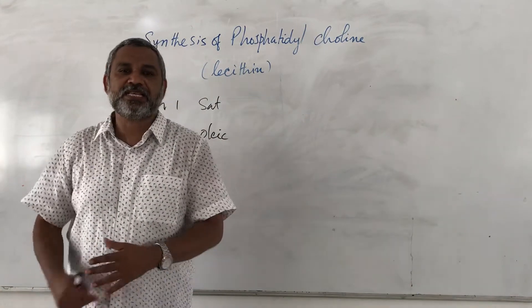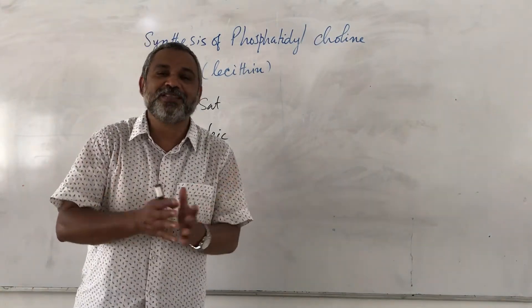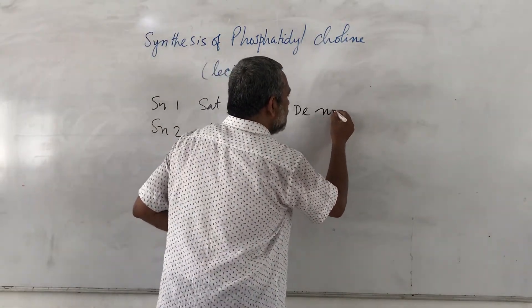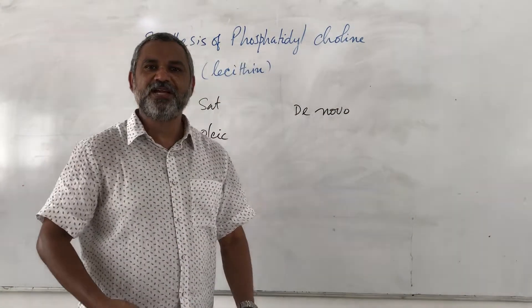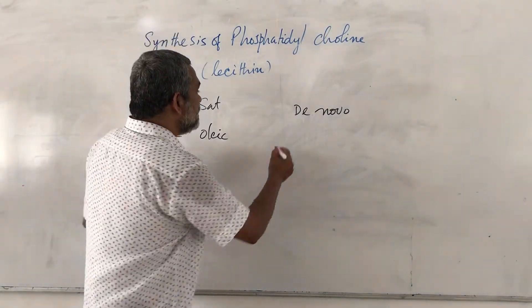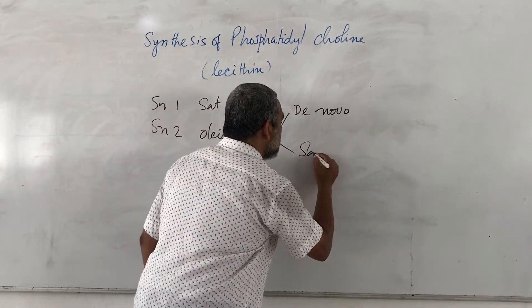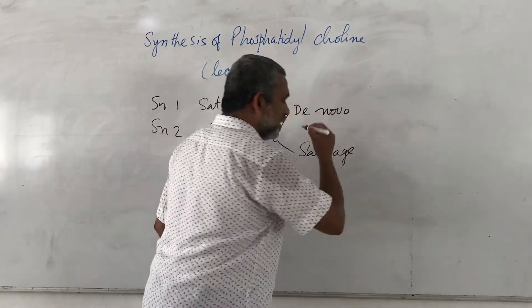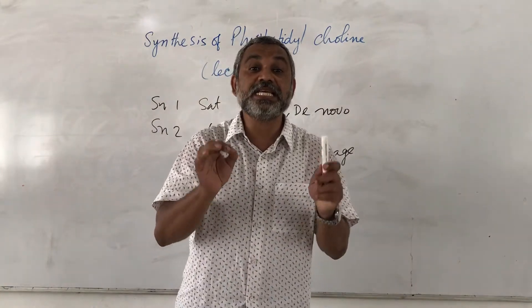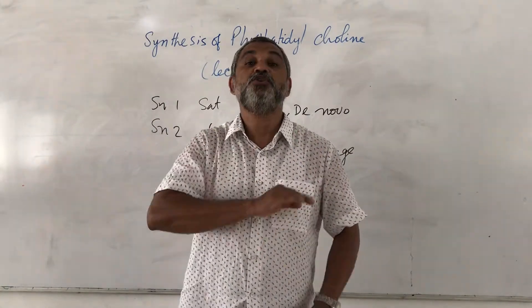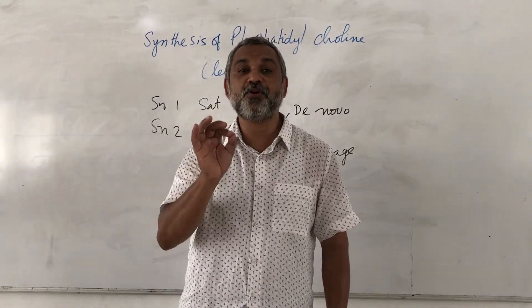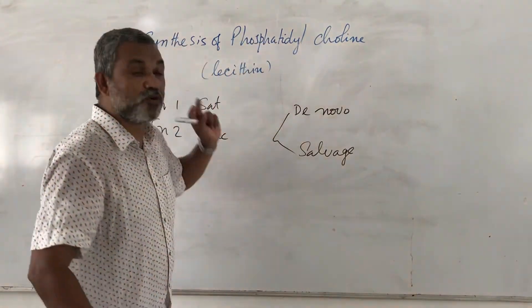Lecithin is synthesized in two ways. One way is called the de novo pathway — de novo means from the very beginning. The second mechanism is called the salvage pathway. In the de novo pathway, as the name suggests, we are starting from the very beginning — you do not need a preformed choline in order to synthesize phosphatidylcholine.